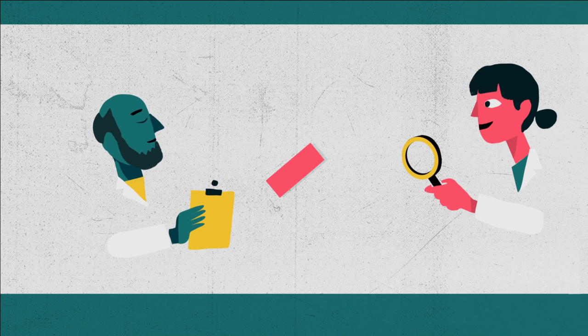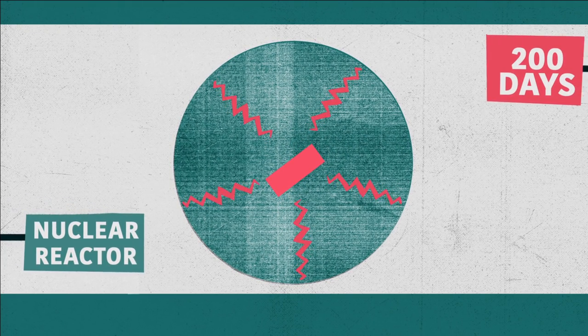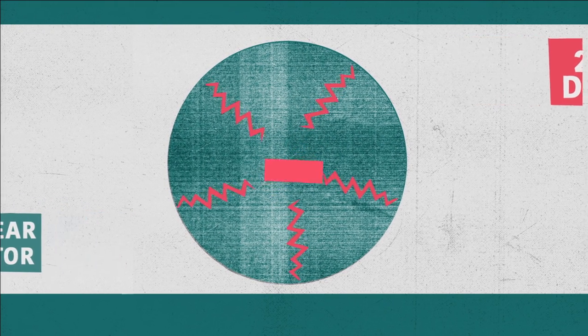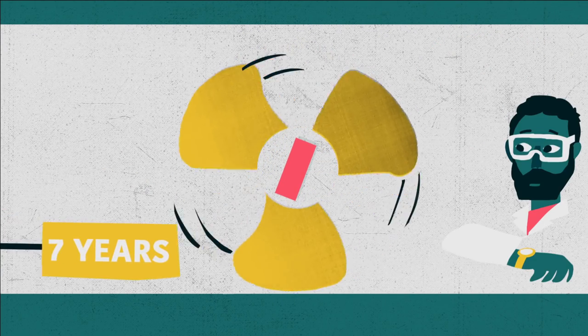To study these imperfections, samples of material were placed inside a nuclear reactor for 200 days. When they came out, they were very hot, or radioactive, and had to sit in storage for seven years to cool.